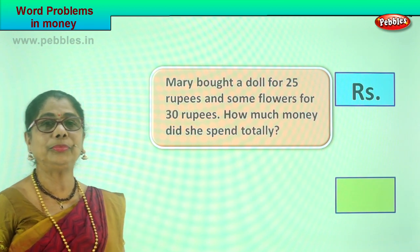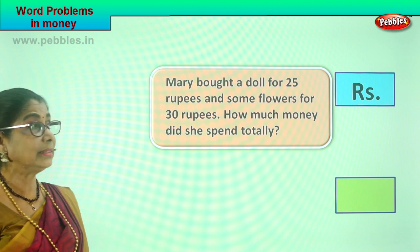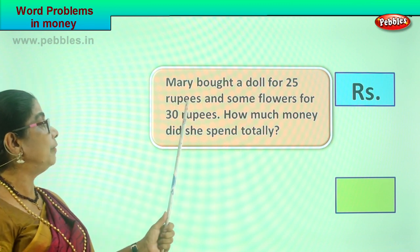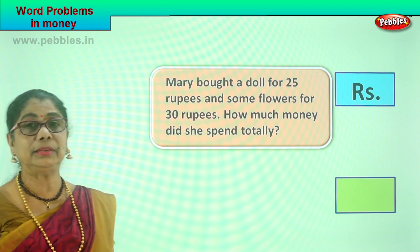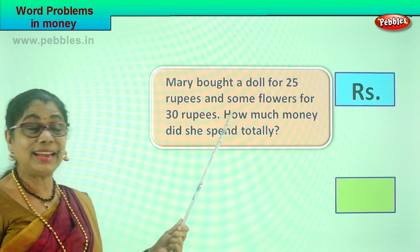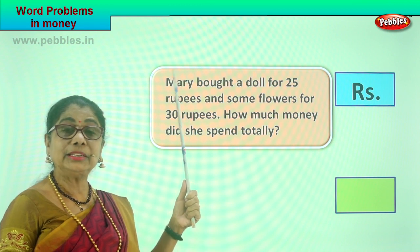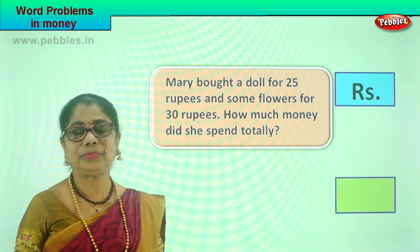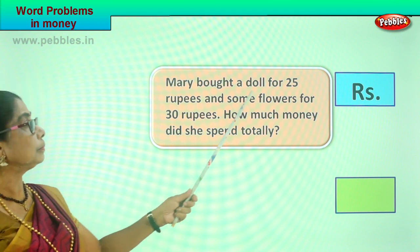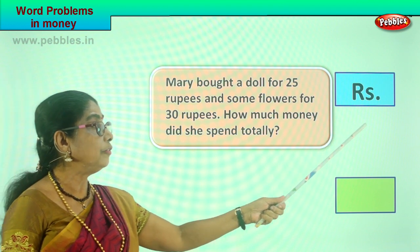Let's go more shopping — come along, let's take another problem. Who is going shopping now? Here is Mary, shopping with her mama. Mary would like to buy some things for herself. Mary bought a doll for rupees 25 and some flowers for 30 rupees. The question: how much money did she spend totally? What is the cost of a doll? Rupees 25. So we write here 2 and 5 — 25.